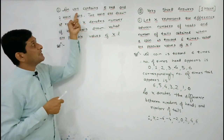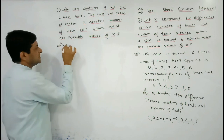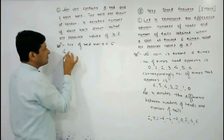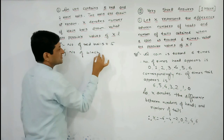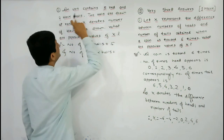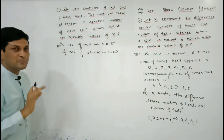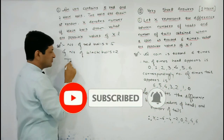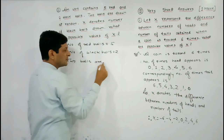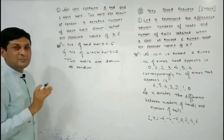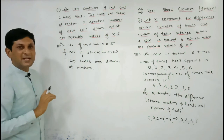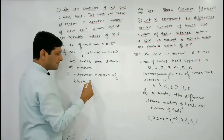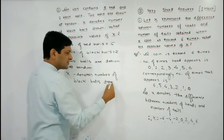In the second example, an urn contains 5 red and 2 black balls. So number of red balls is 5 and number of black balls is 2, making a total of 7 balls. Two balls are drawn at random. The random variable X denotes the number of black balls drawn.